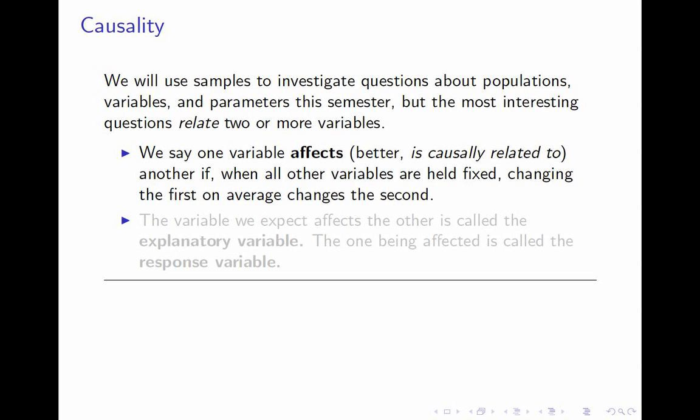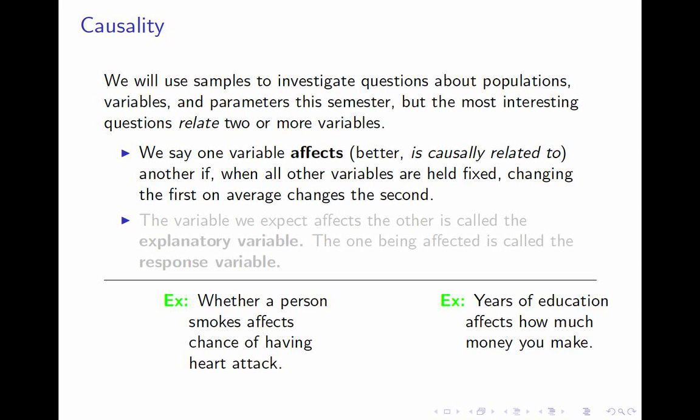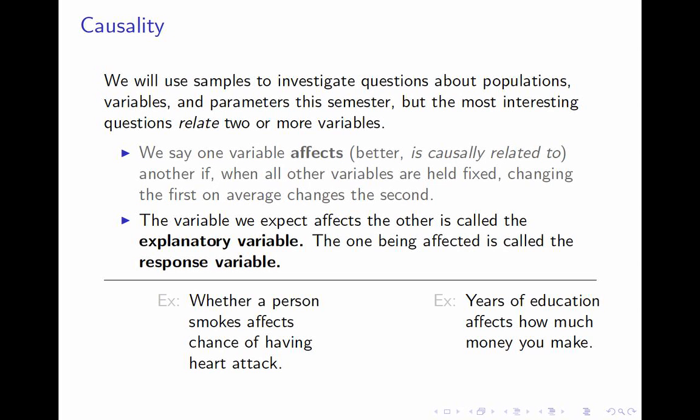Here are some examples I'll get to in a moment, but first a bit of terminology. The variable we expect to be doing the affecting is called the explanatory variable, and the one expected to be affected is called the response variable. Usually we won't know that there's a causal relationship — we'll be investigating whether A affects B. As soon as you're thinking that, A is the explanatory variable and B is the response variable. The explanatory variable explains what B is doing; B, the response, is responding to what A is doing.